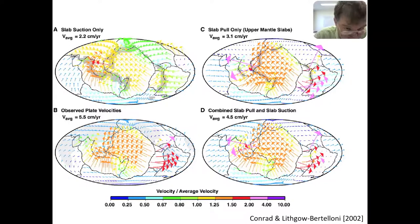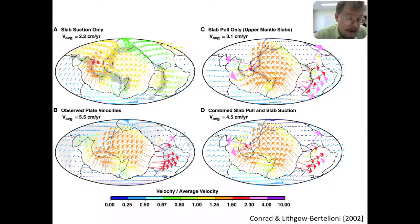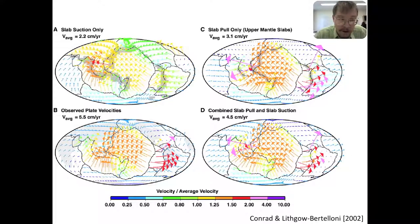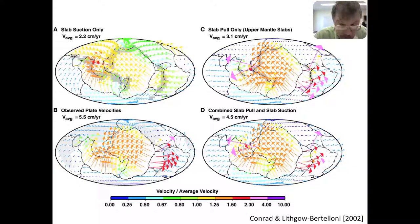If you put in just what the authors call slab suction — the long-wavelength forces from cumulative negative buoyancy from slabs but not the slabs themselves — you get very symmetrical convergence. Everything converges toward the Northwest Pacific. But if they mathematically attach a force directly to the edge of subducting plates, what they call slab pull force only, you start to create this asymmetry. Adding these two force components together, you can reproduce global plate motions.